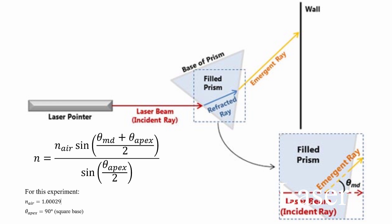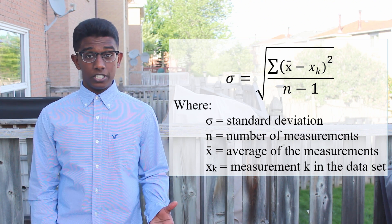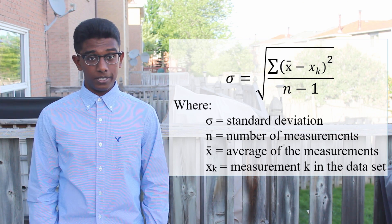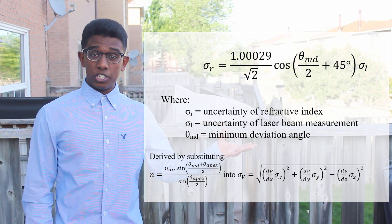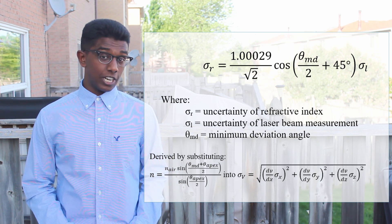The diagram and equation on screen now illustrate the relationship between the angle of minimum deviation, apex angle, and the refractive indices of both media. This equation was used to calculate the uncertainty using sample standard deviation and 10 repeated measurements. This next equation is used to calculate the uncertainty of a value after an operation has been performed. I know I went over those equations a bit quickly, but that's not the focus of this video.